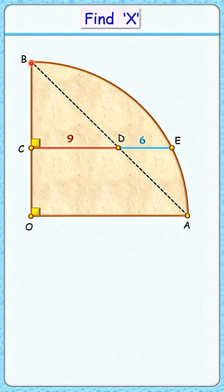This interesting question: can you find the radius of this quadrant where given is the length of this red and blue line segment as 9 and 6 centimeters? Let's check the solution. Let's assume the radius of the quadrant as R centimeters.